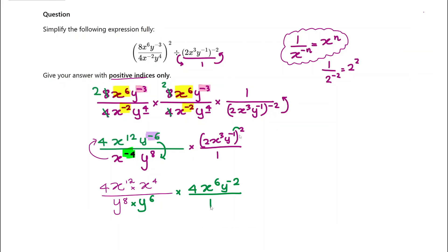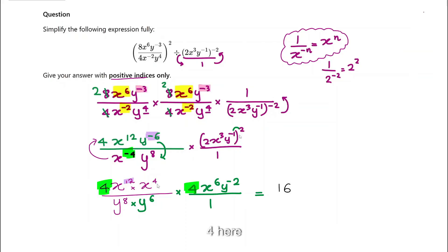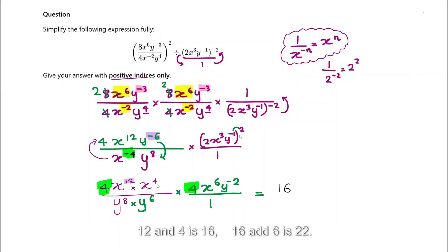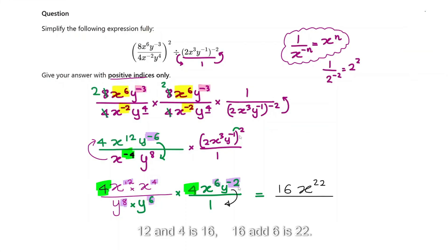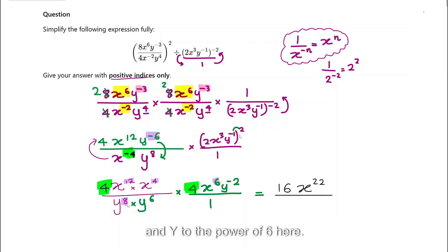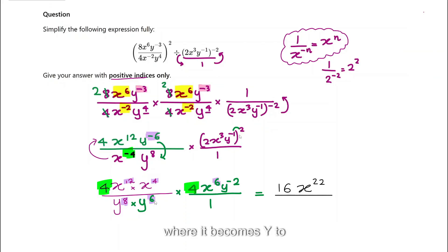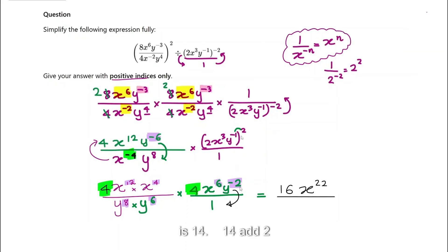Now I can simplify to get the final answer. The numbers: 4 times 4 gives 16. For x: I have x to the power of 12, x to the power of 4, and x to the power of 6 — adding them: 12 plus 4 is 16, and 16 plus 6 is 22, so x to the power of 22. For y in the denominator: y to the power of 8 and y to the power of 6, and another y up here moves down to give y to the power of 2 positive. So 8 plus 6 is 14, plus 2 gives y to the power of 16. I cannot simplify any further.